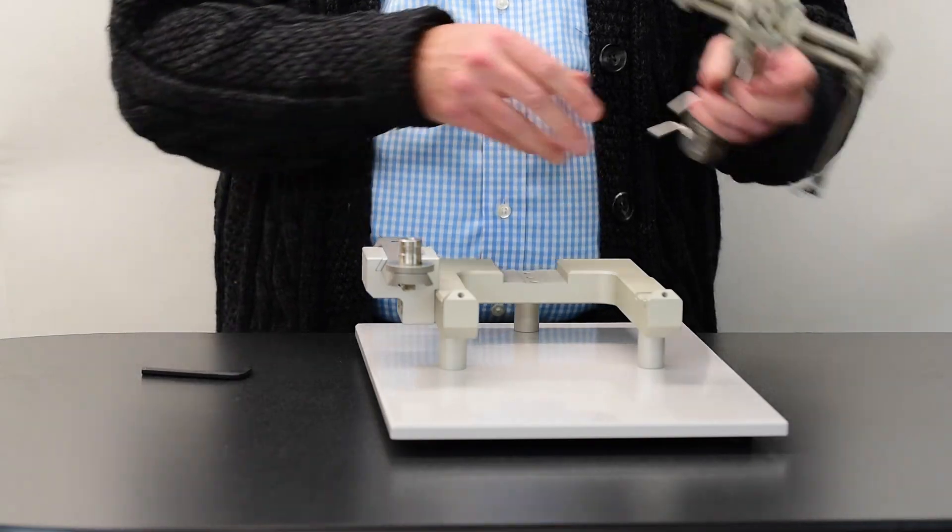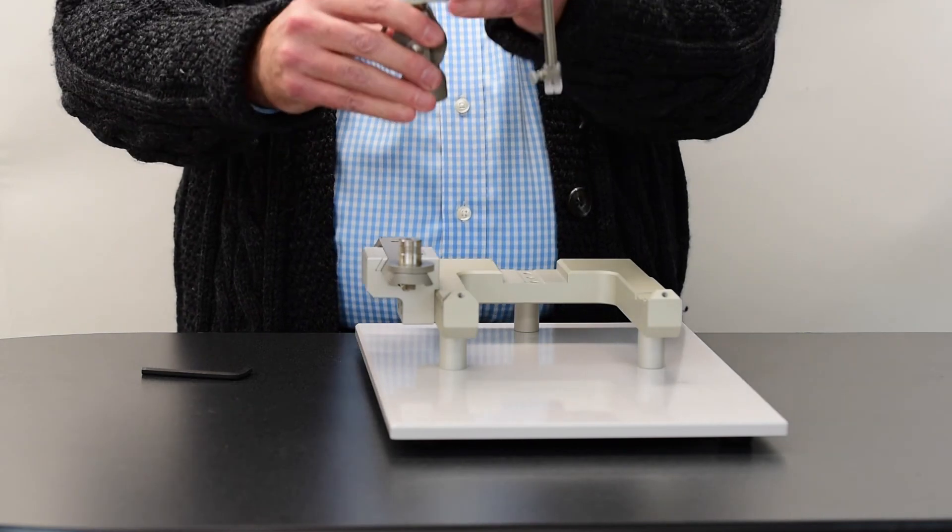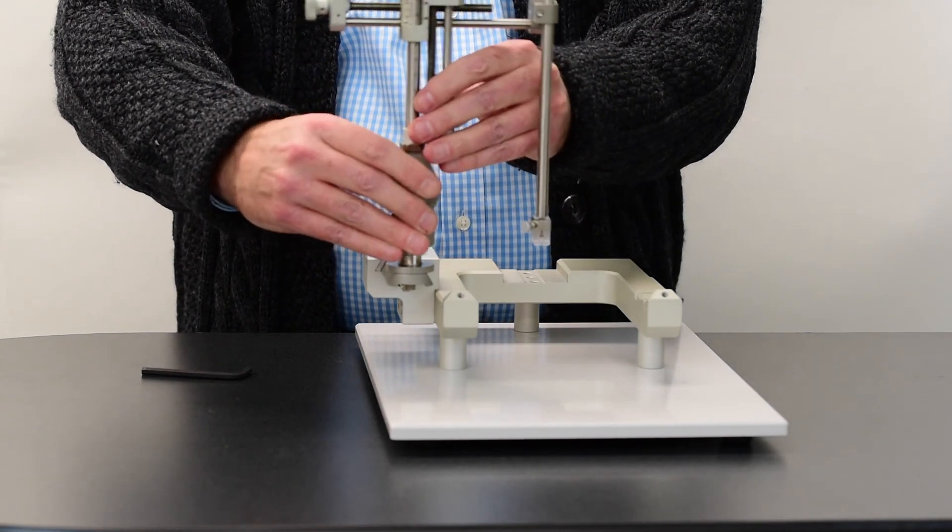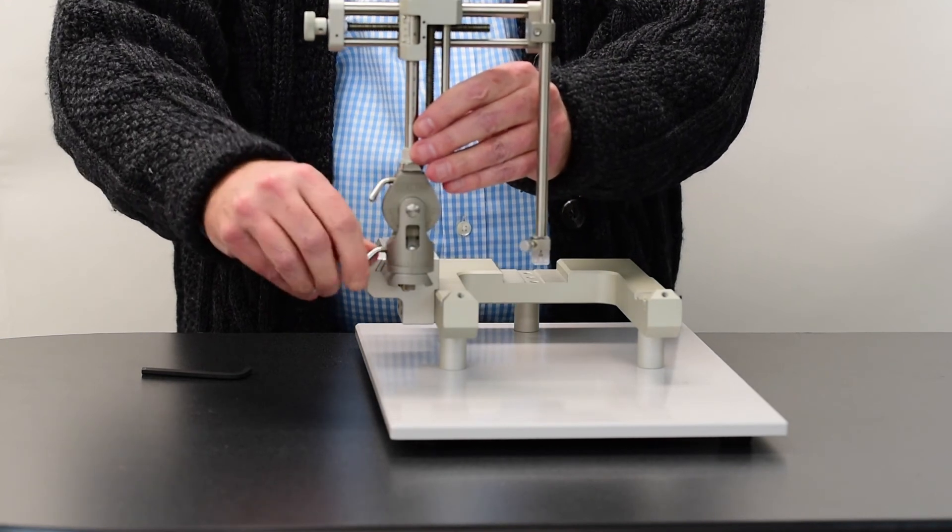And then when you're done, if you have this part as well, this is the ML medial lateral drive and the dorsal ventral drive. Just simply place it right on top and tighten it right here.